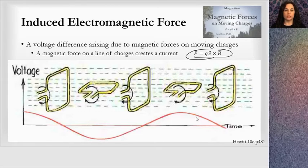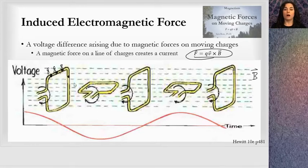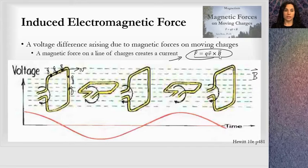Here I have a picture from the Hewitt Conceptual Physics 10th edition book where we are rotating a wire loop in a magnetic field. These dotted gray lines in the background are the magnetic field, and the loop has no current in it — it's just a conducting loop rotating in that magnetic field. All along here are charges; there's an infinite amount of charges basically all along this loop. If I rotate it, the charges will have a velocity in the magnetic field.